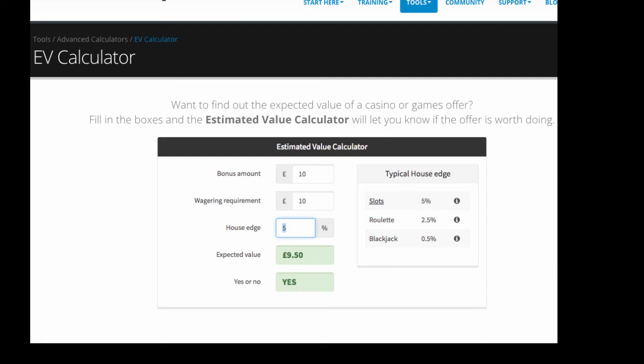the positive value of that offer then becomes £7, because we're expected to lose £2.50 from the initial wagering, 50p from the bonus. But they've given us £10, so that would leave us £7. So I would look at that and think, yeah, that's definitely an offer worth doing.